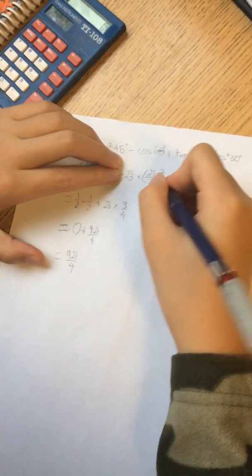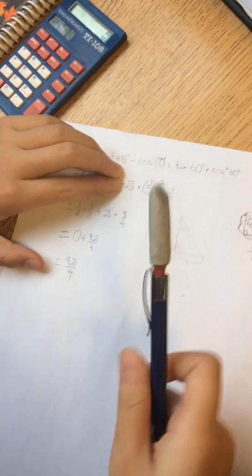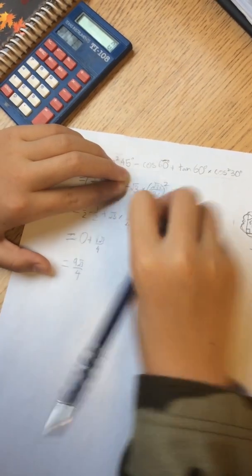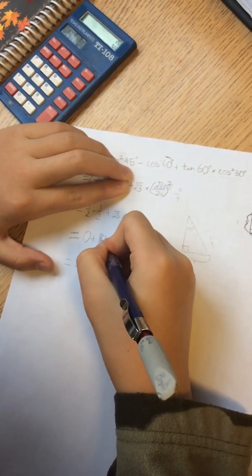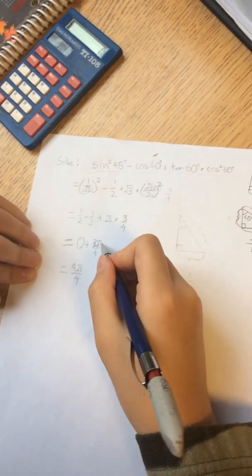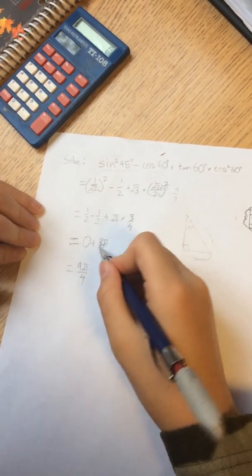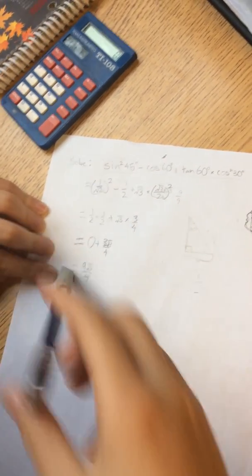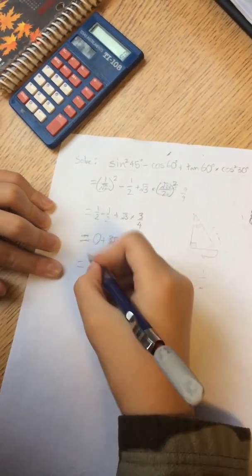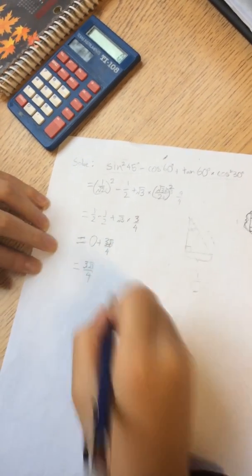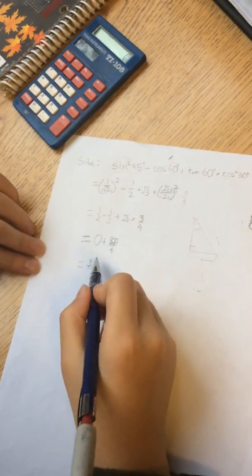That's it? No. What? Not over yet. Oh my god. I made one mistake. This is 3. This is actually 3 because the square root of 3 times square root of 3, that's only 3. So, it's actually 3 times square root of 3 divided by 4. So, the answer will be 3 times square root of 3 over 4. Ta-da!